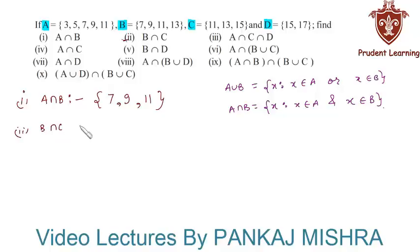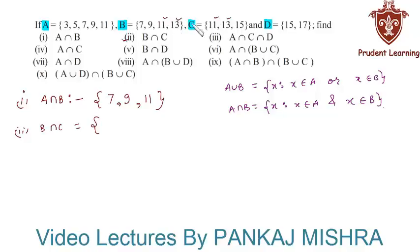Moving on to the second section, here we have to find B intersection C. B intersection C is nothing but a set containing all the elements that are common to both set B and set C. Here we can see that 11 and 13 are common to both sets, so B intersection C = {11, 13}.